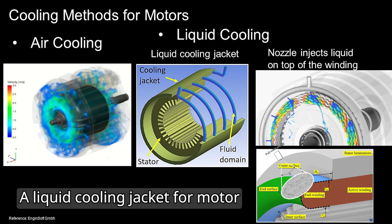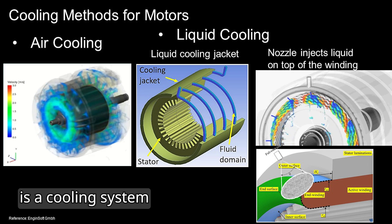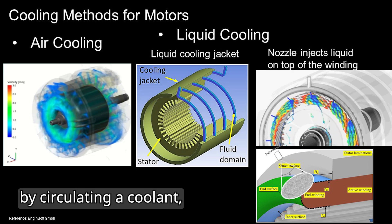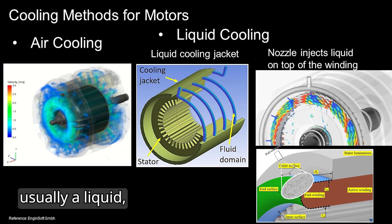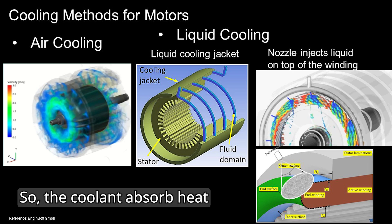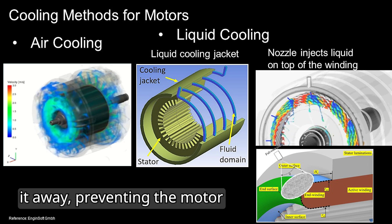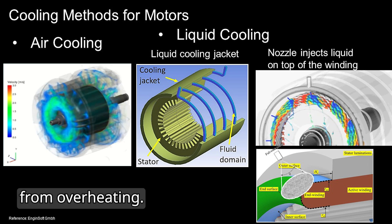A liquid cooling jacket for a motor is a cooling system designed to regulate temperature by circulating coolant, usually a liquid, around the motor casing. The coolant absorbs heat generated by the motor's operation and carries it away, preventing the motor from overheating.